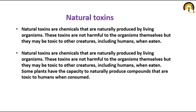Natural toxins are chemicals naturally produced by organisms. They are not harmful to the organism itself, but may be toxic to other creatures including humans when eaten. Some plants have the capacity to naturally produce compounds that are toxic to humans when consumed. A few toxins are also called secondary metabolites, which provide a defense mechanism to the plant — defense against herbivores and pathogens.